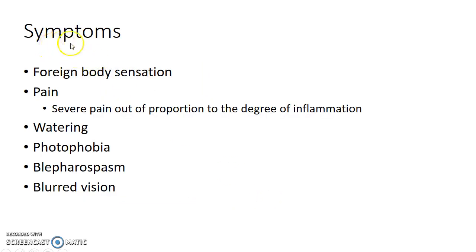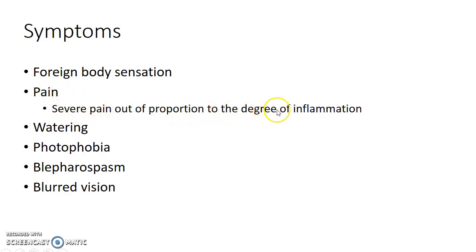Now let us see about the symptoms of Acanthamoeba keratitis. There will be foreign body sensation and pain. The pain will be severe and out of proportion to the degree of inflammation. There can also be watering, photophobia, blepharospasm, and blurred vision.